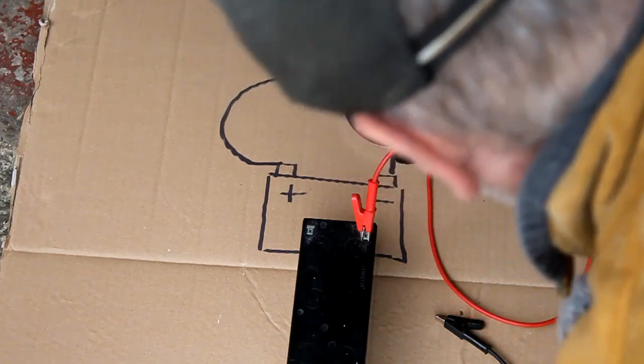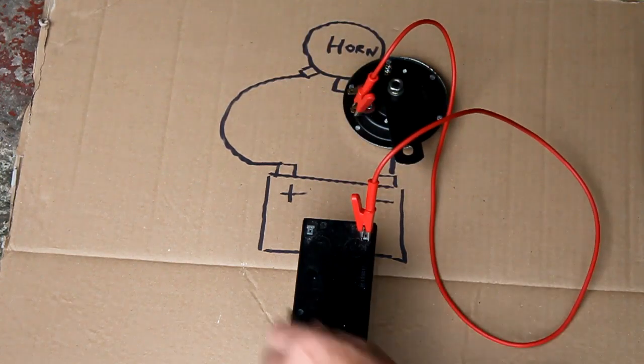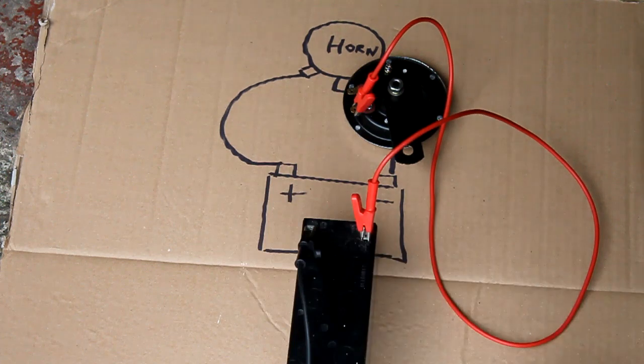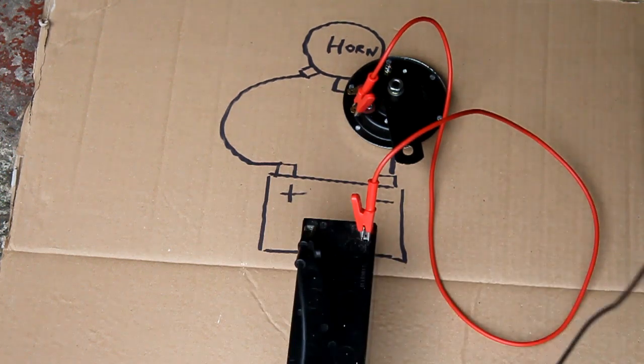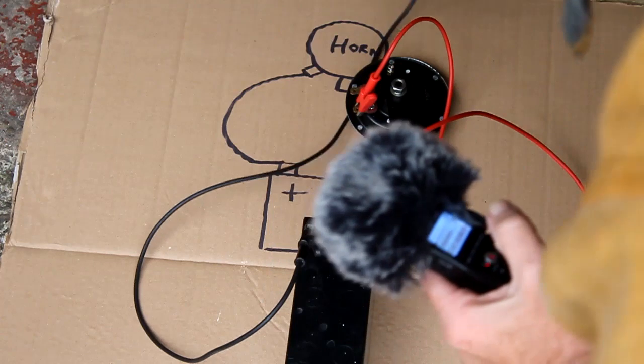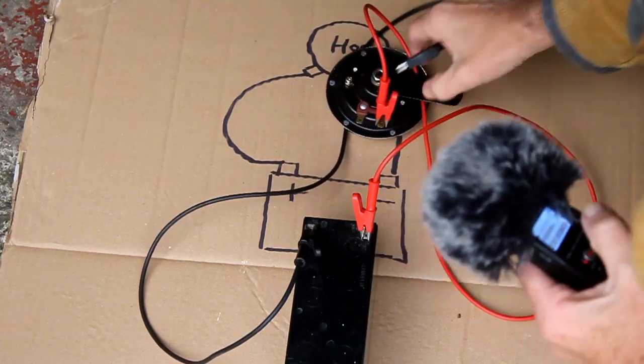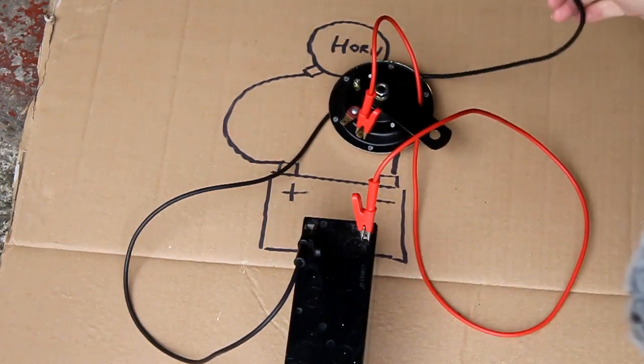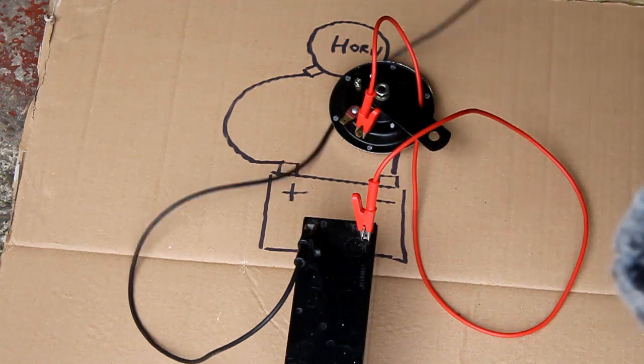Here we go. There you go. And do the same for the earth. So now if I connect this earth lead to the second of the two connections on the horn, the horn should operate and make a noise.